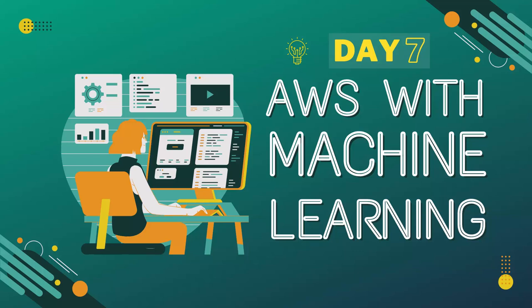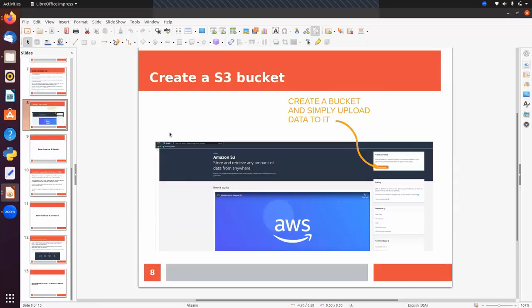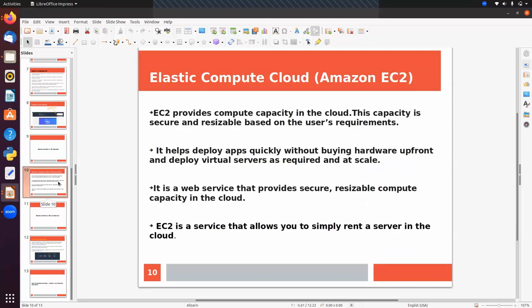Hello guys. Today's session: first we will see what is EC2 and how to create an EC2 machine. Then after, we will talk about what is AWS SageMaker and how to create a SageMaker notebook. In the last class we covered S3 - how to create an S3 bucket. In today's session, first we will talk about EC2.